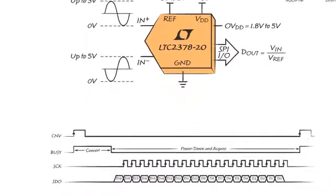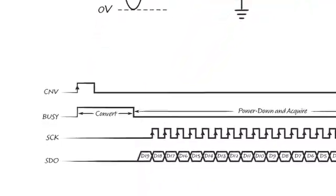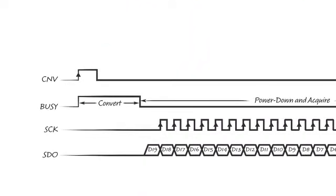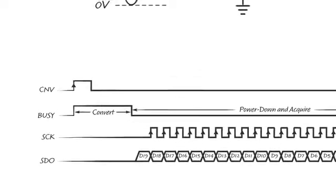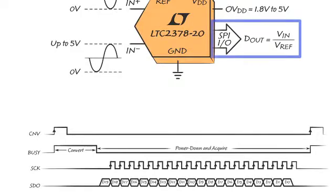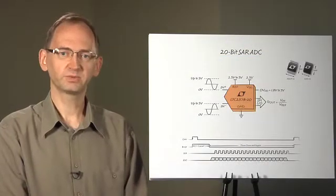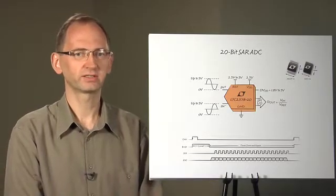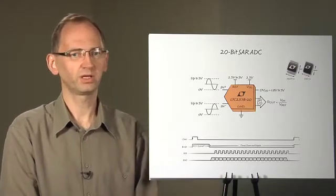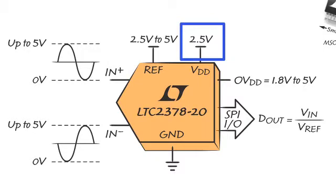When you provide a rising edge on a convert start pin, they sample a differential input voltage and perform a self-timed sequential conversion process, resulting in a 20-bit word that you can read on a serial interface. The maximum conversion rate is 1,000,000 samples per second while consuming only 21mW from a 2.5V power supply.